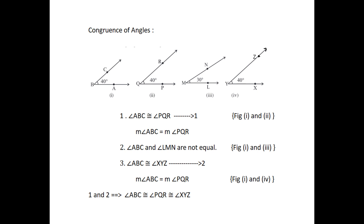The measure of angle ABC and angle LMN are not equal. Next, see the angles ABC and XYZ. Here, the rays YX and YZ appear to be longer than rays BA and BC. You may think that angle ABC is smaller than angle XYZ. But remember that the rays in the figure only indicate the direction and not any length. On superposition, you will find that these two angles are also concurrent. From these, if two angles have the same measure, then they are concurrent. Also, if two angles are concurrent, then their measures are the same.